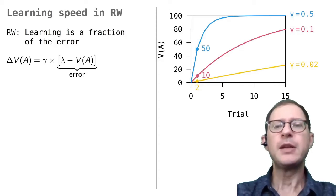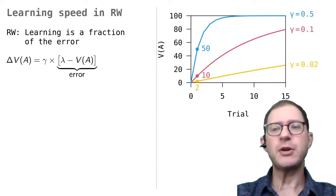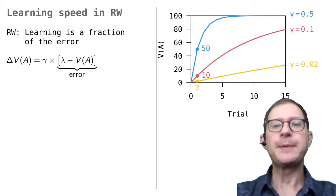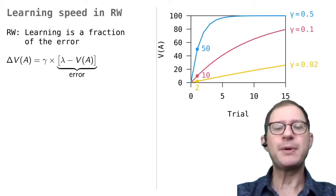The graph above me shows how associative strength grows for three different values of gamma, 0.02 in yellow, 0.1 in red, and 0.5 in blue. As you see, a larger value means faster learning. We can understand this by remembering that gamma determines how much of the error is corrected with each CS-US experience. Let's look at the first experience, which is highlighted with a dot on the three learning curves.